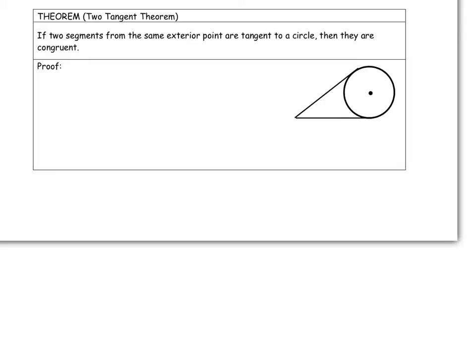So that's saying that if I have points here, let's call this A, that's the point of tangency here, this is the point of tangency here, B, C, and let's call this circle O. So this theorem is saying that segments AC and CB are congruent.